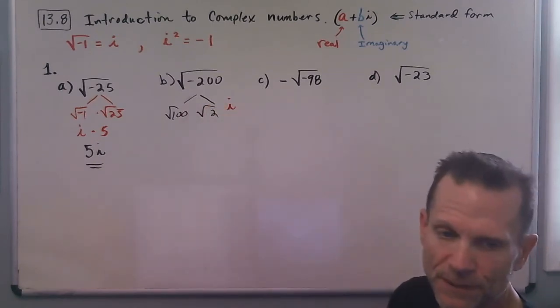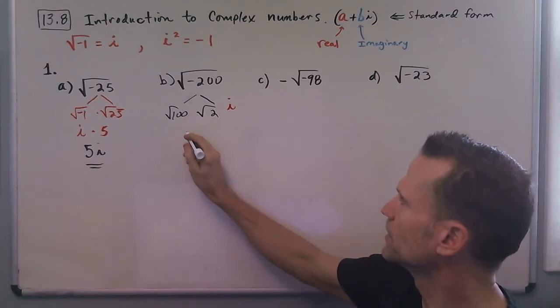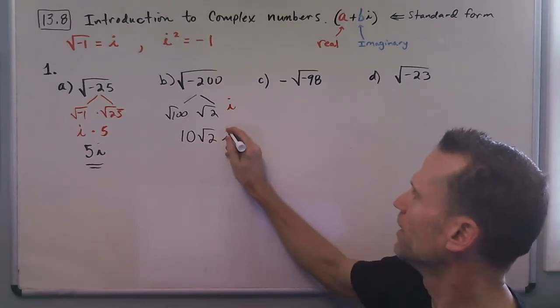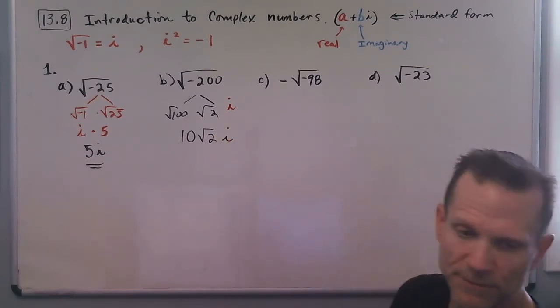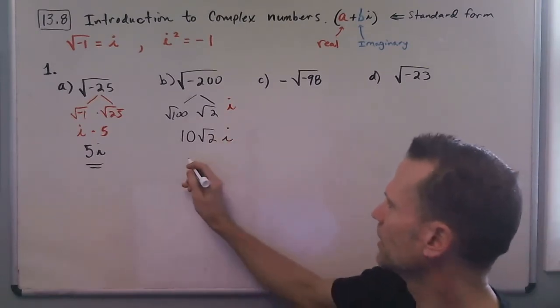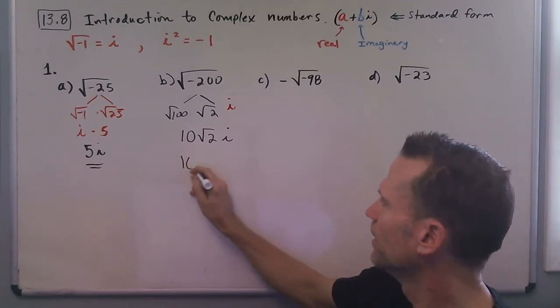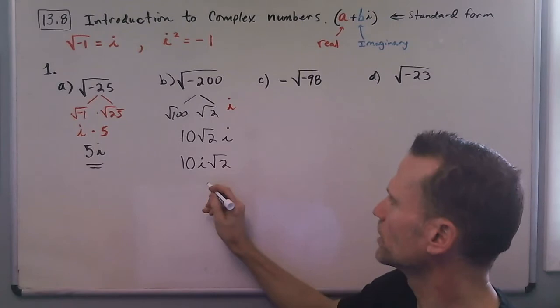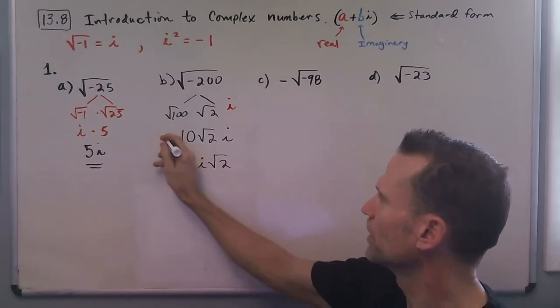And then the square root of 100 is 10, so we have 10 radical 2i. Okay, now sometimes you'll see this written as 10i radical 2, which is also acceptable, so both of these are acceptable answers.